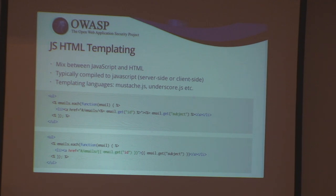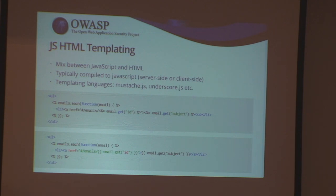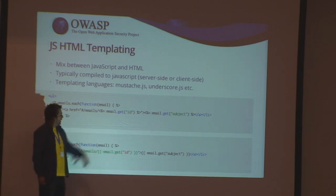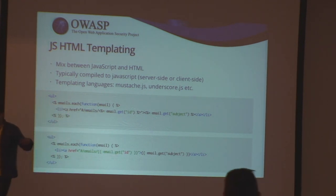JavaScript templating is a mix between JavaScript and HTML. Templates are typically compiled on the server side, but they can also be compiled on the client side — it's faster to pre-compile them server-side and deliver them to the client. There are millions of types of templating languages these days. Two examples are underscore and mustache. You have JavaScript code in there and HTML output, and it gets compiled into a function you call with data, which then outputs HTML.